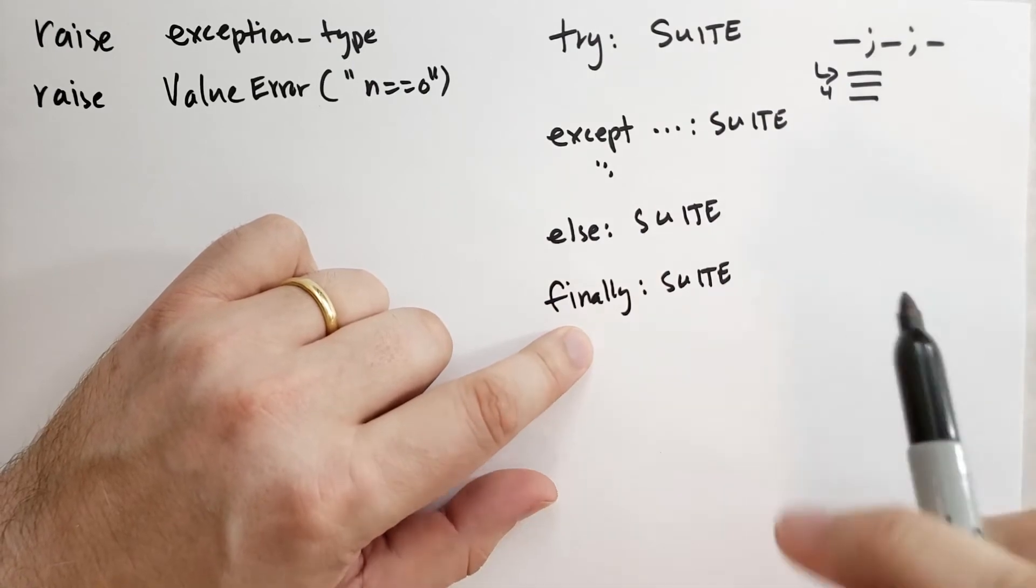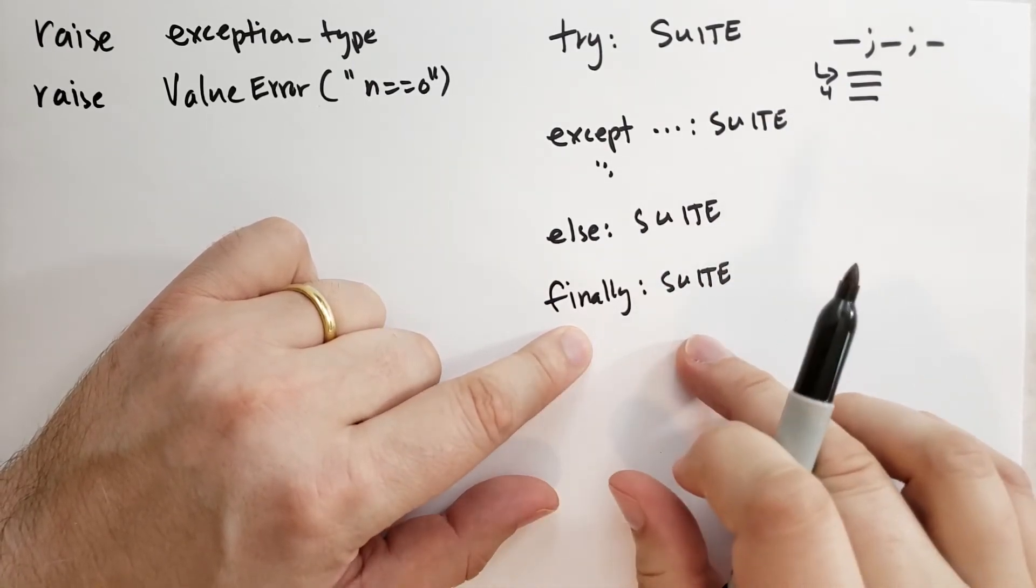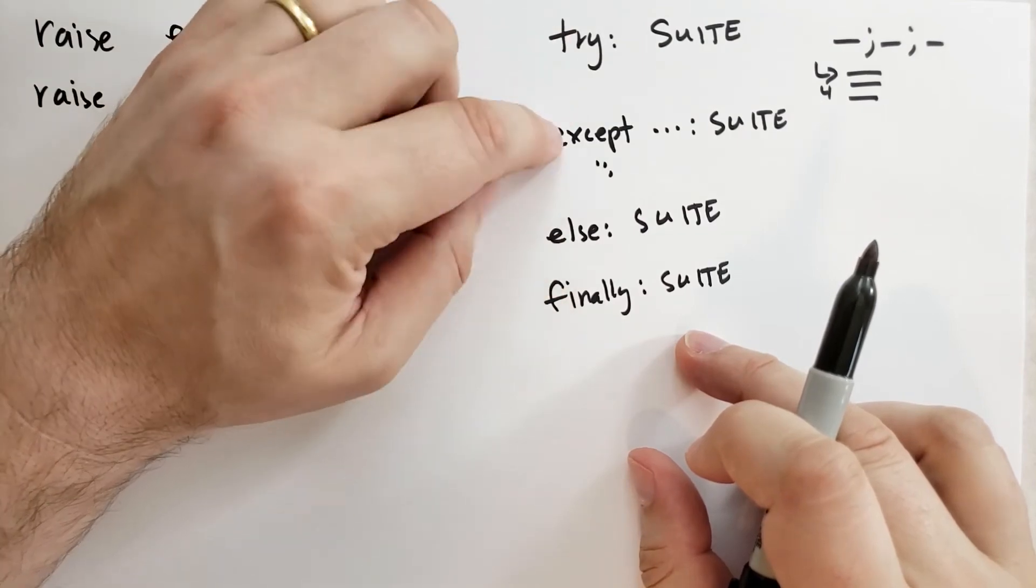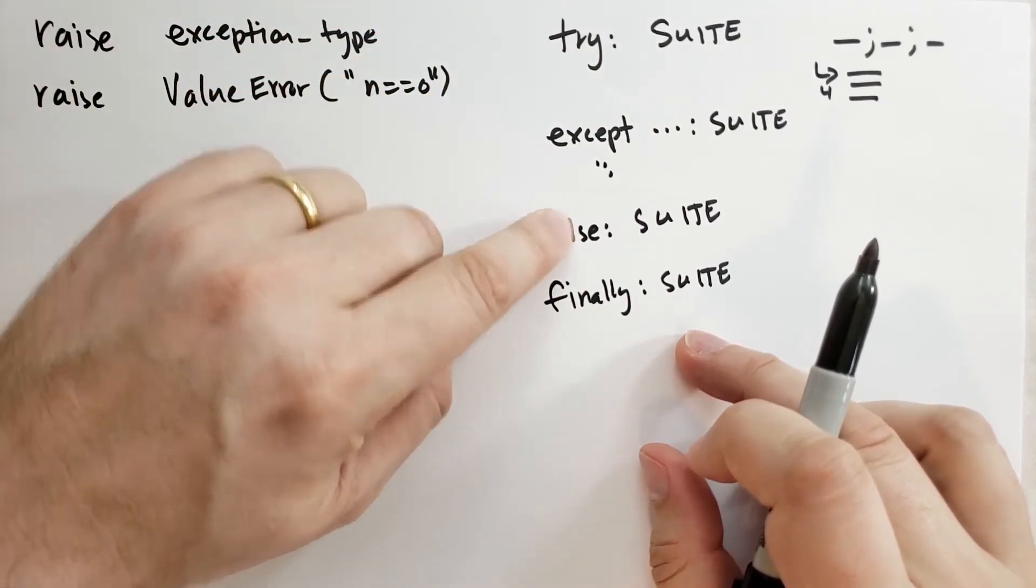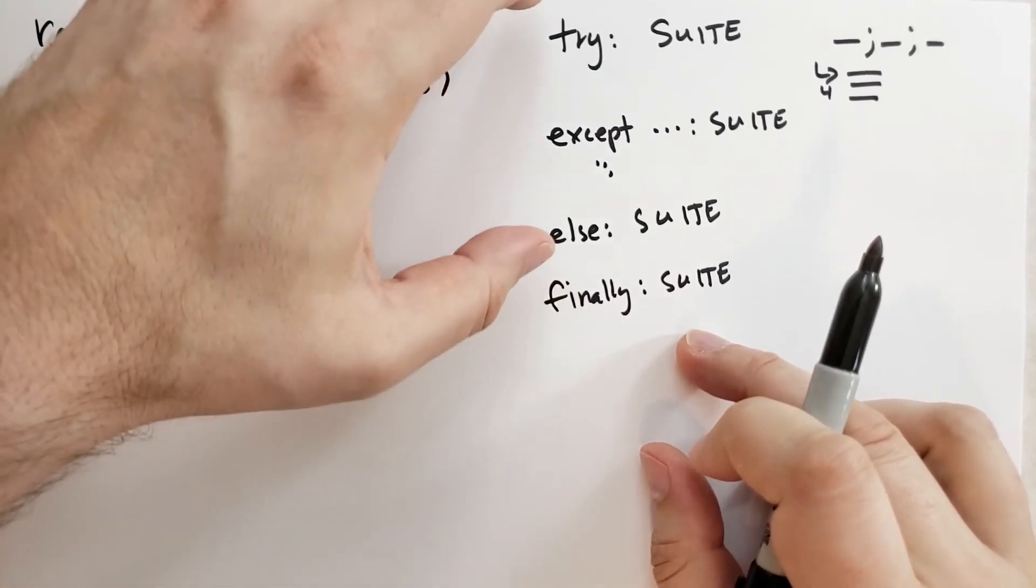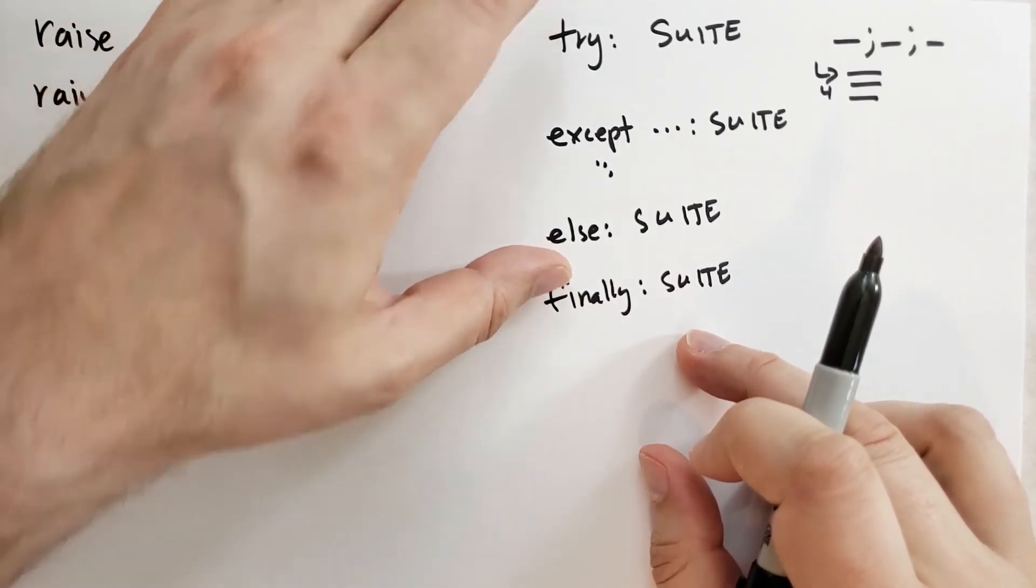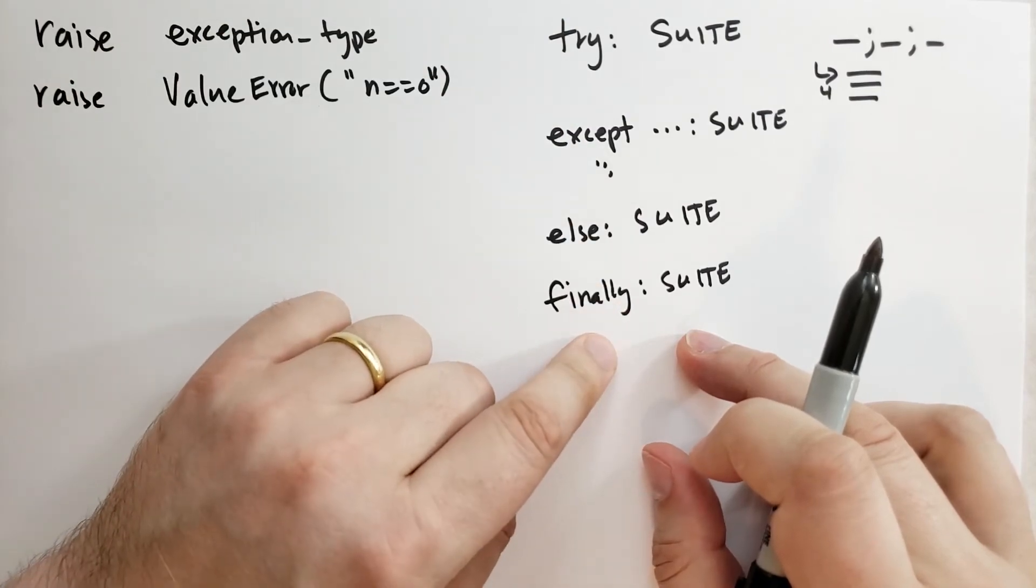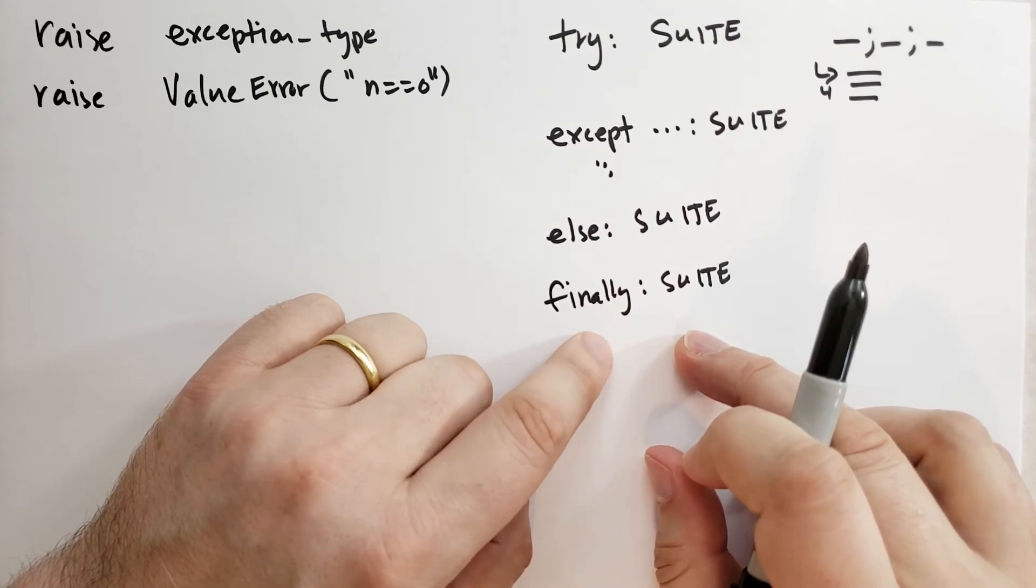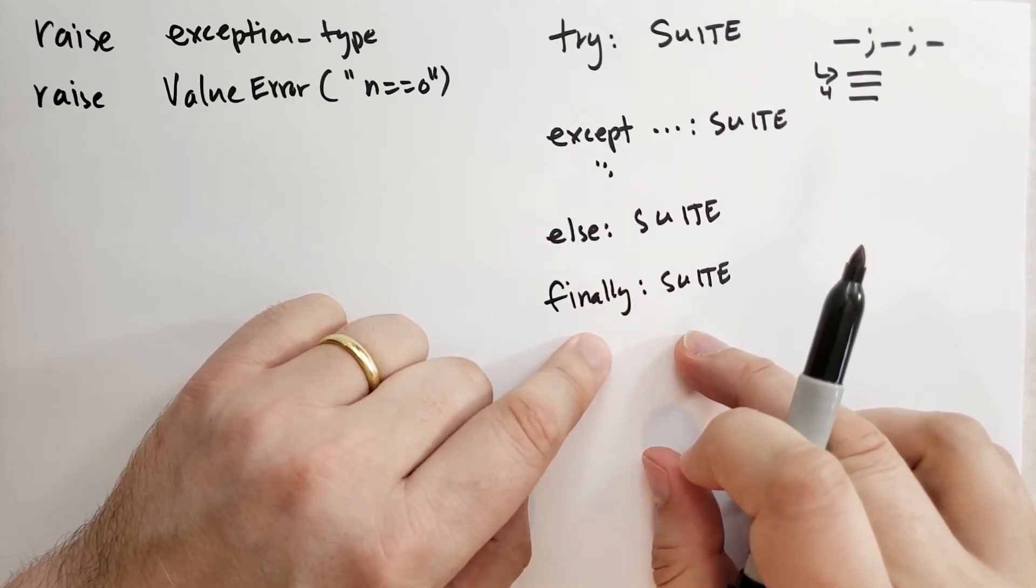The finally block, note that if it returns or raises its own exception, then the return value that came from the try suite or the except suite or the else suite is lost. The finally return statement substitutes that. Also, if there was an exception being raised, then you raise an exception or return here, that exception is lost. It's highly discouraged to return or raise an exception from a finally block, but you can do it if you really want to.